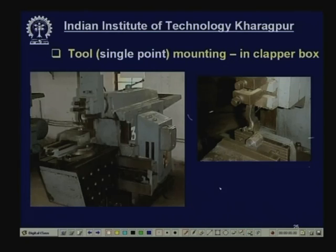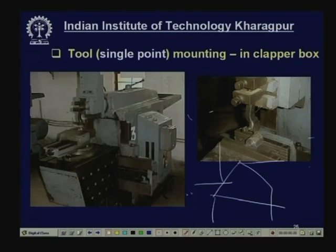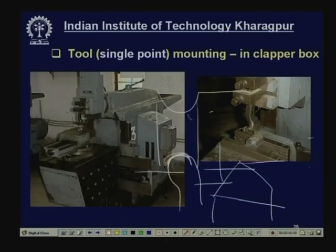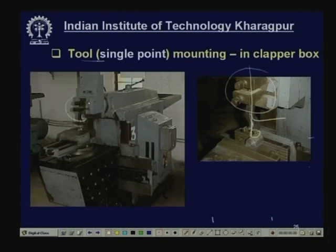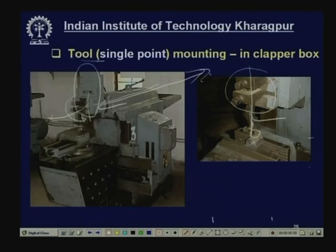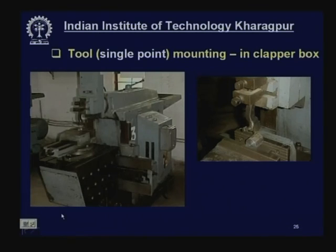The tools used in shaping machines are single point tools — meaning they have only one cutting point. This single point tool can make flat surfaces. Sometimes the tool can have a radius for producing a formed surface; these are called form tools. The tool is mounted in a tool holder, which is mounted into the clapper box. The clapper box remains in position during the forward stroke and is lifted during the return stroke to avoid rubbing. The clapper box is mounted on the shaping head, which is mounted on the ram, and this ram reciprocates imparting the cutting velocity.